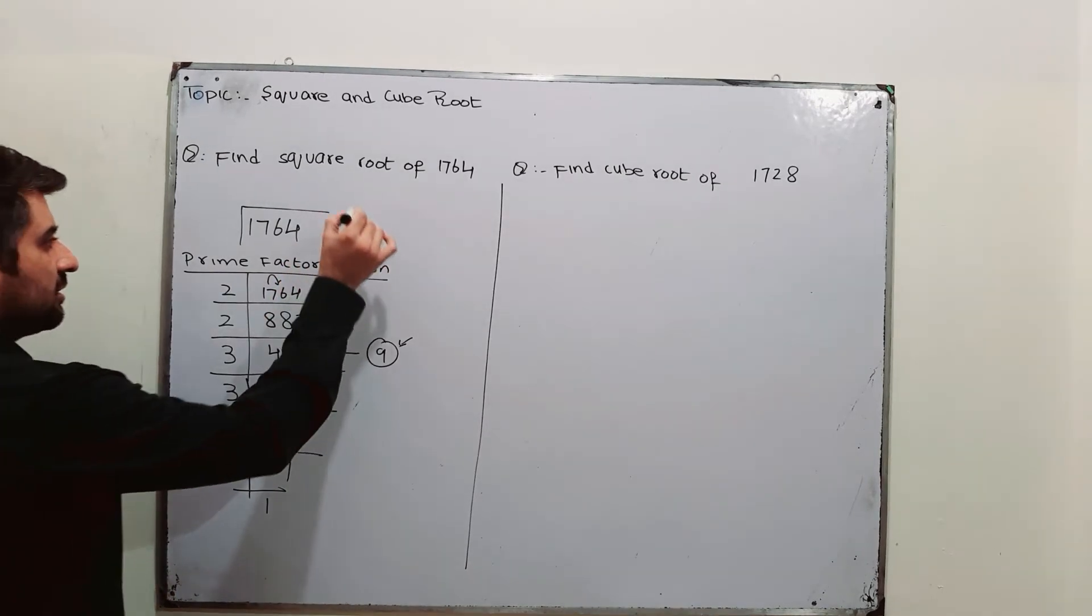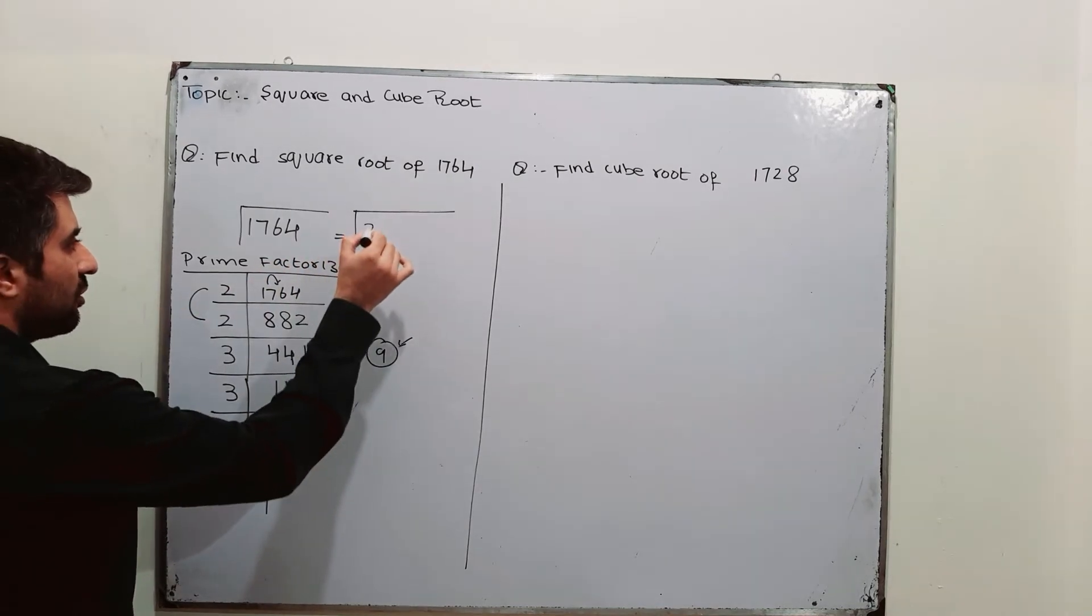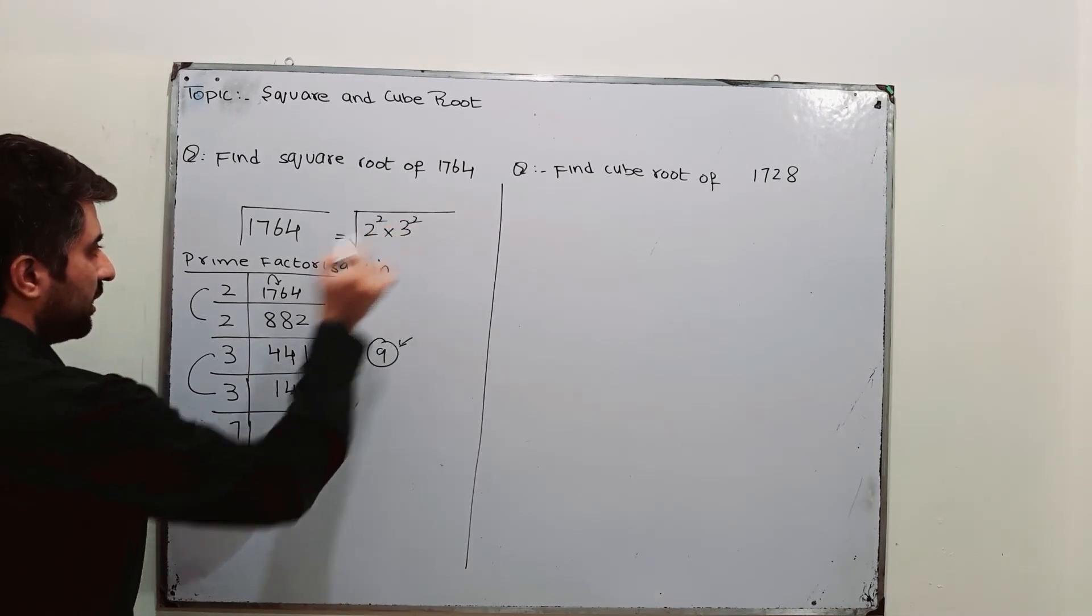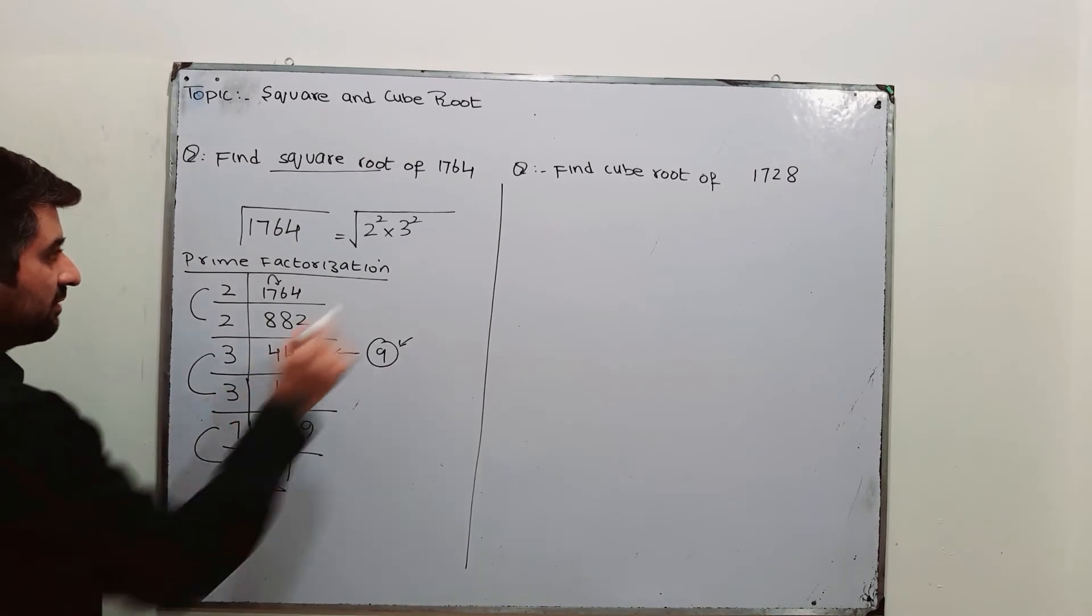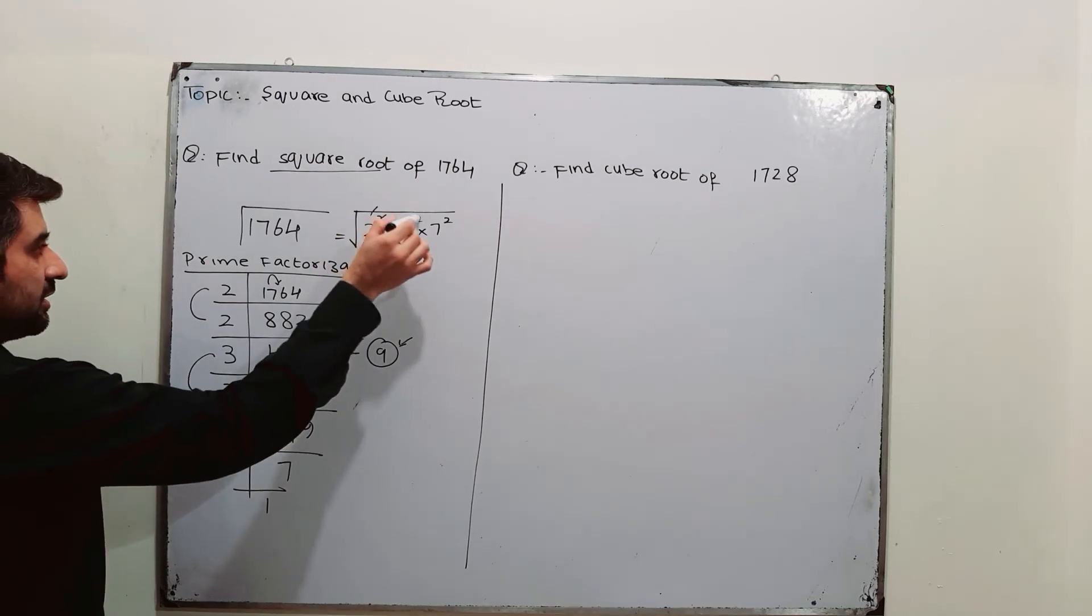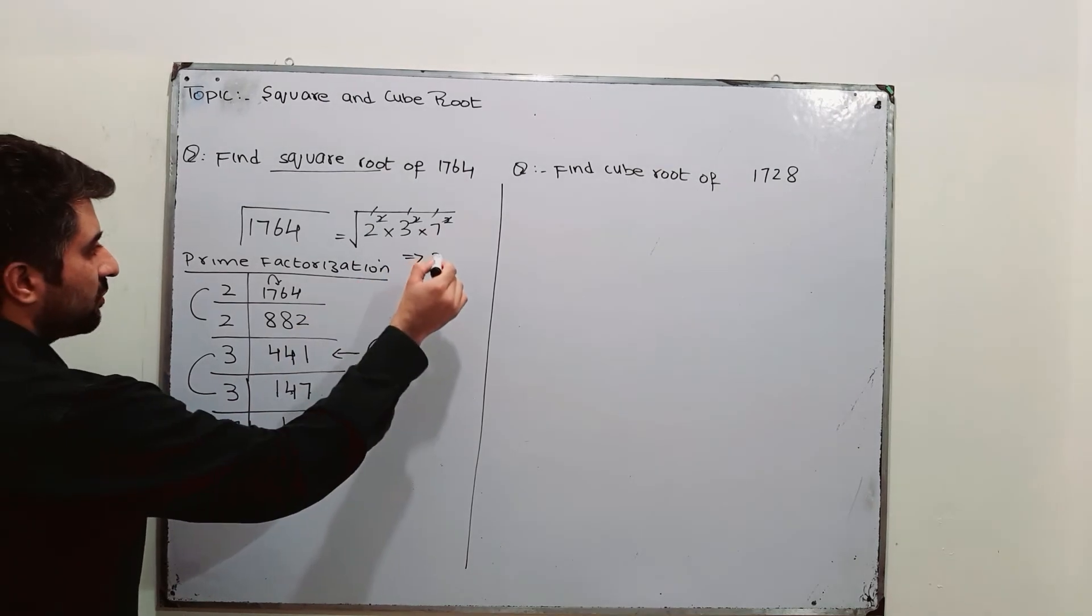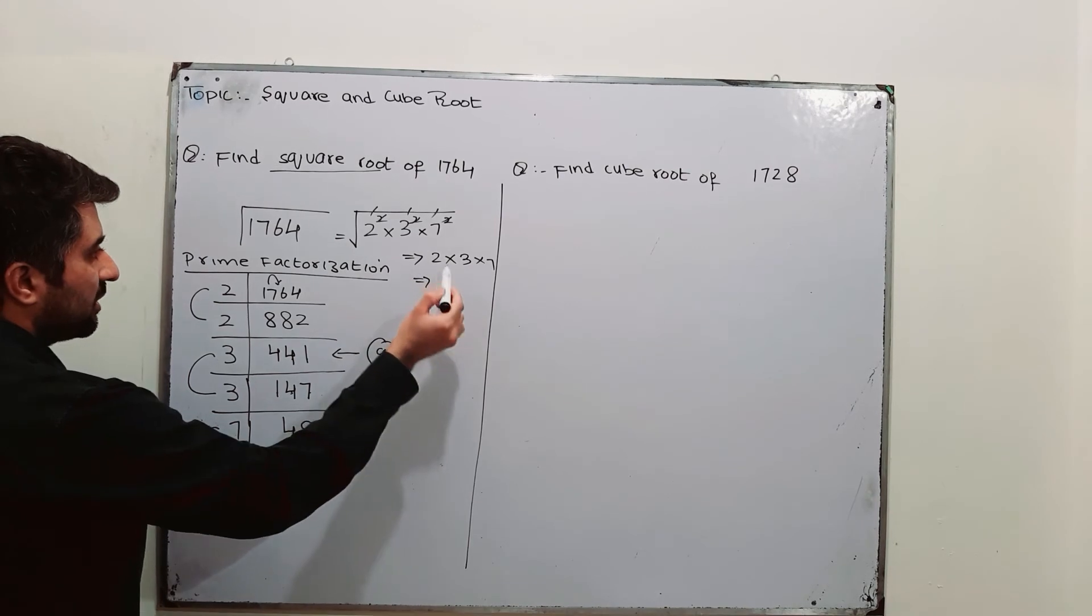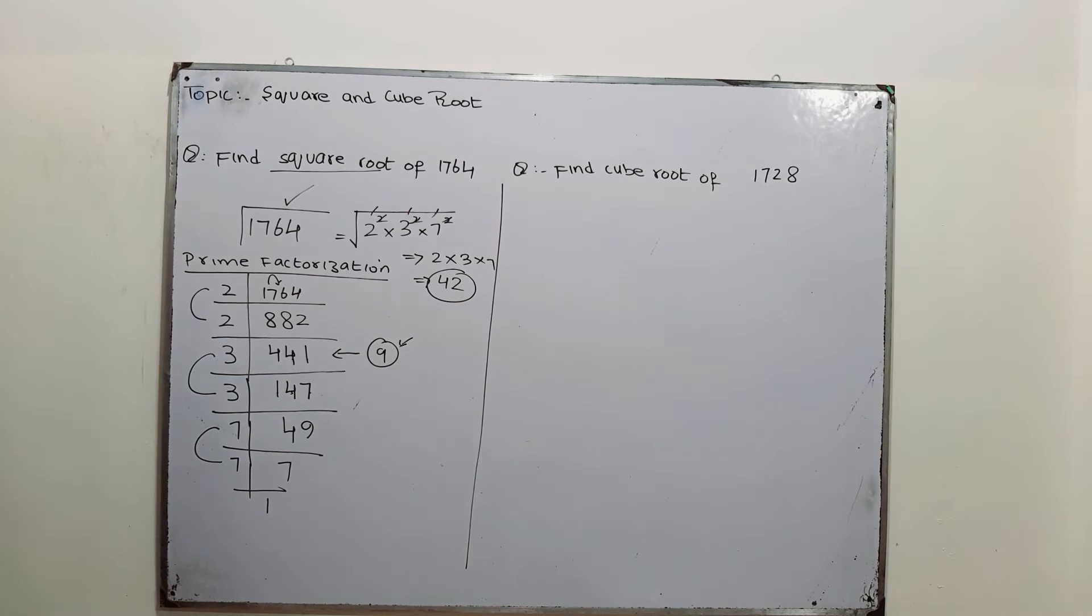So, you can write under root 1764 as square form. 2 square. Write numbers in square form when you have to find the square root. 7 and 7 is 7 square. And what happens next? Squares and square roots, they are cancelled. Square and square root cancel each other. It will be 2 into 3 into 7. That is 7, 3 times 21 into 2 is 42. This is the square root of 1764.